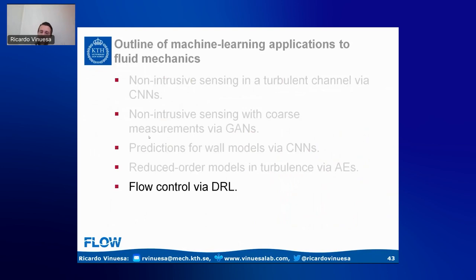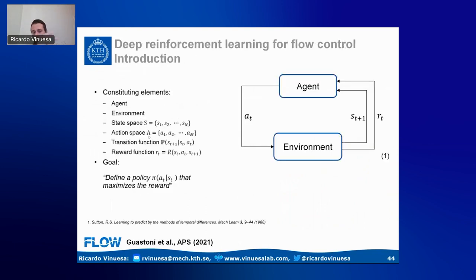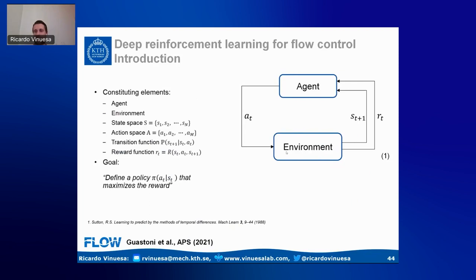The last application is flow control via deep reinforcement learning, which is a quite promising area. In deep reinforcement learning, an agent — our neural network — interacts with an environment, which could be a CFD code simulating the flow we are trying to control. The agent interacts through control actions, and the environment changes its state and returns a reward.